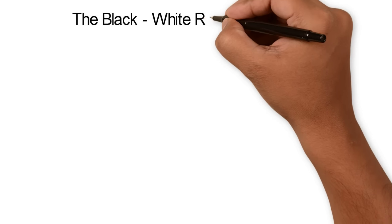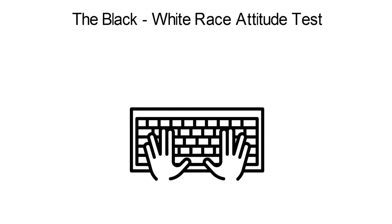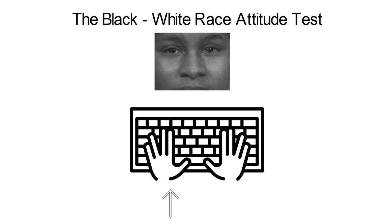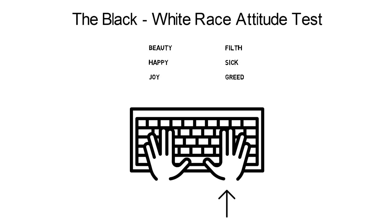The black-white race-attitude test, for example, compares implicit attitudes toward two racial categories: black folks and white folks. Each racial category is represented by cropped photos of male faces. To begin, you're asked to sort the faces as quickly as possible. If you see a white face, hit a key to your left; if you see a black face, hit a key to your right. Next, you sort words that represent two attitudinal categories — good and bad. When you see a good word, such as "beauty," hit a key to your left; when you see a bad word, such as "filth," hit a key to your right.